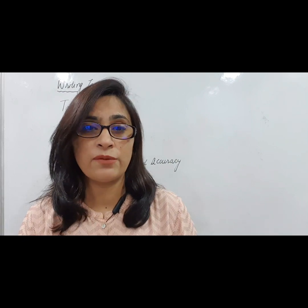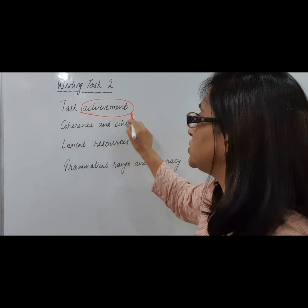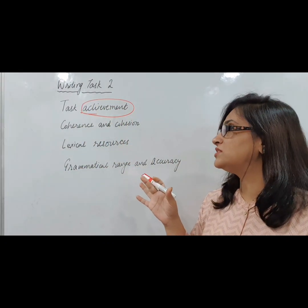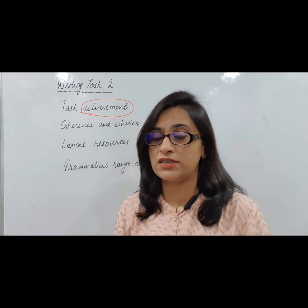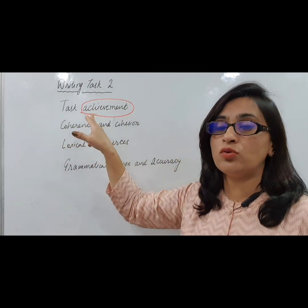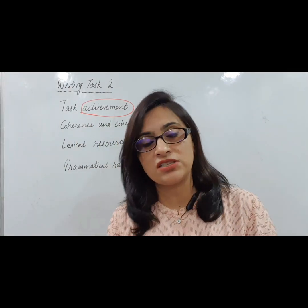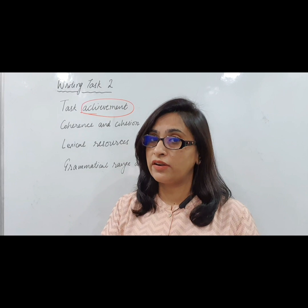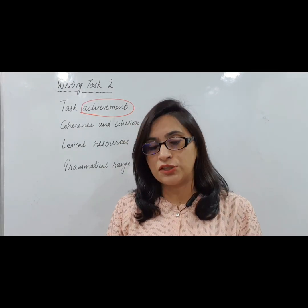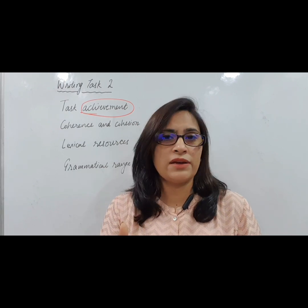So the first assessment criterion is task achievement. Task achievement means you are given a writing topic and you need to write what you are asked for. If the examiner is asking you to talk about agree or disagree, or explain the statement, or the problems and solutions, you need to write about that — don't generalize the topic.